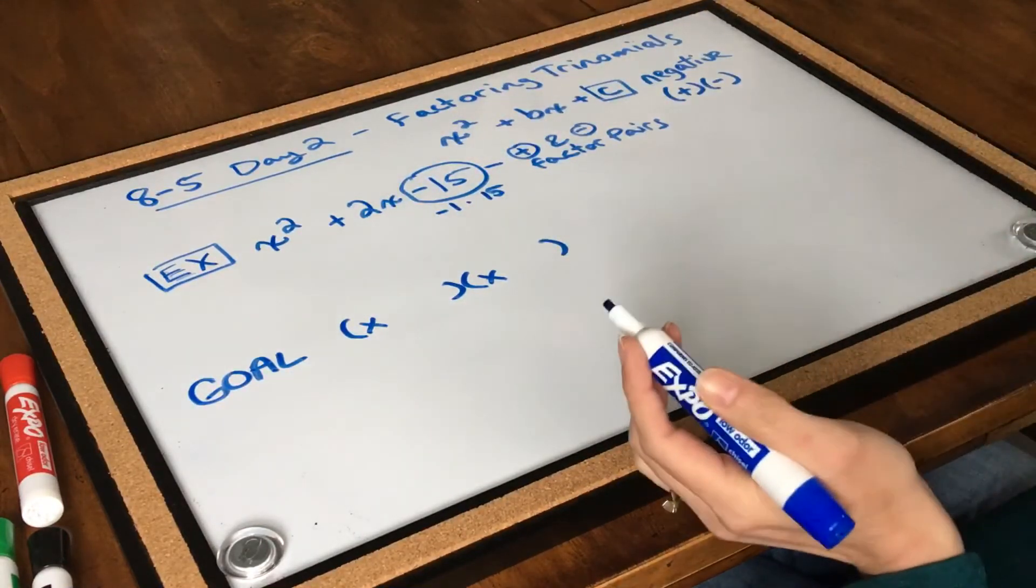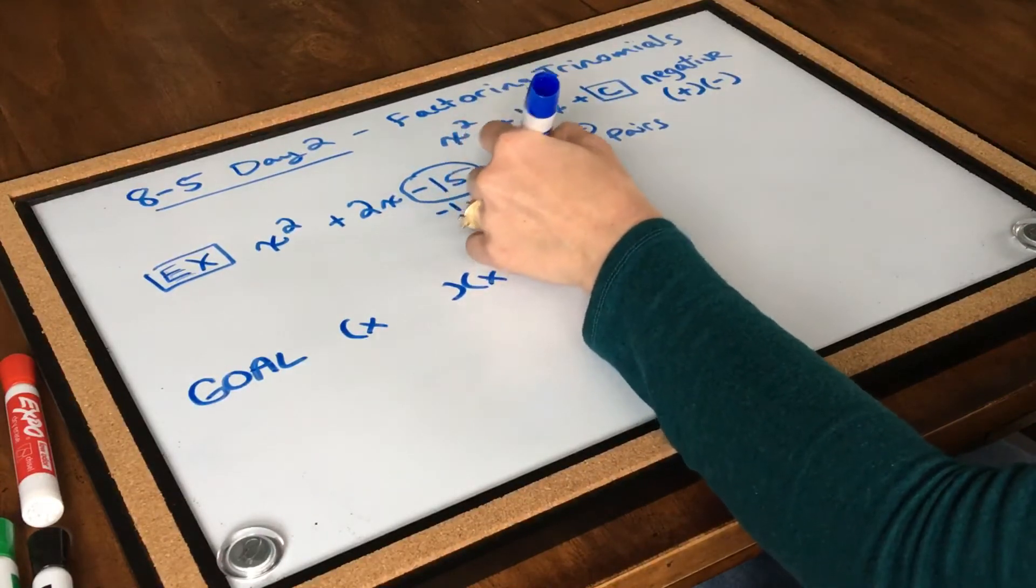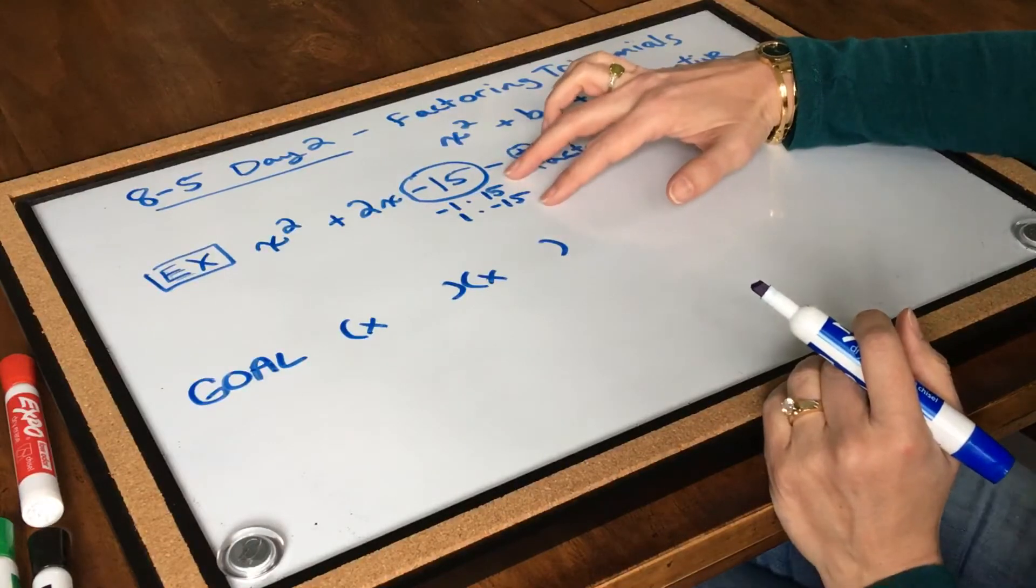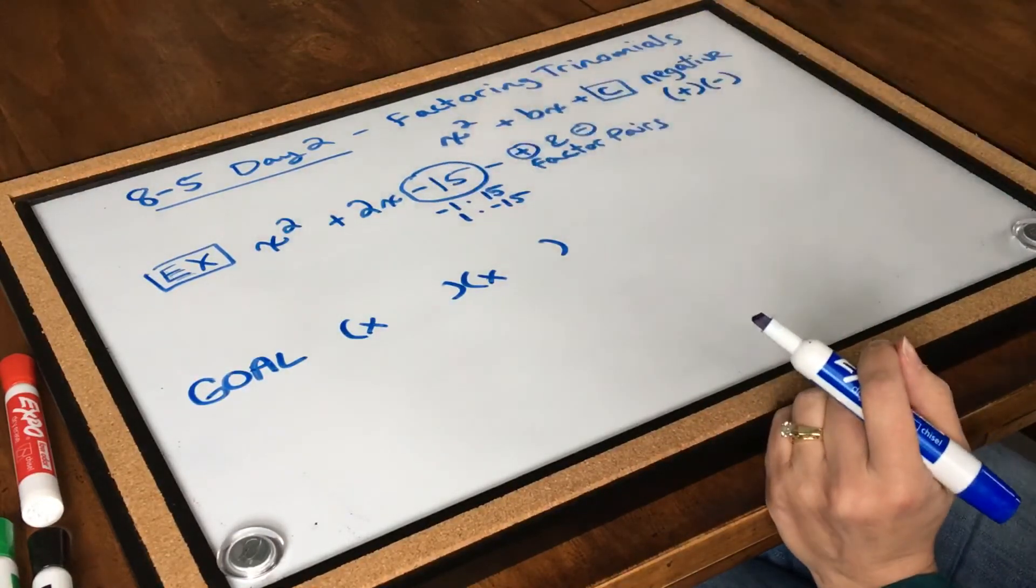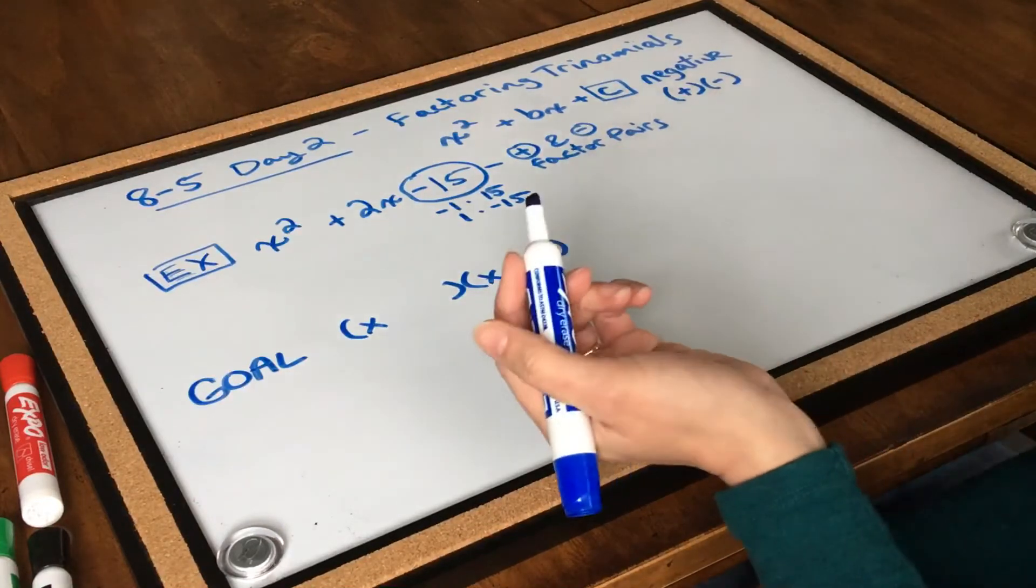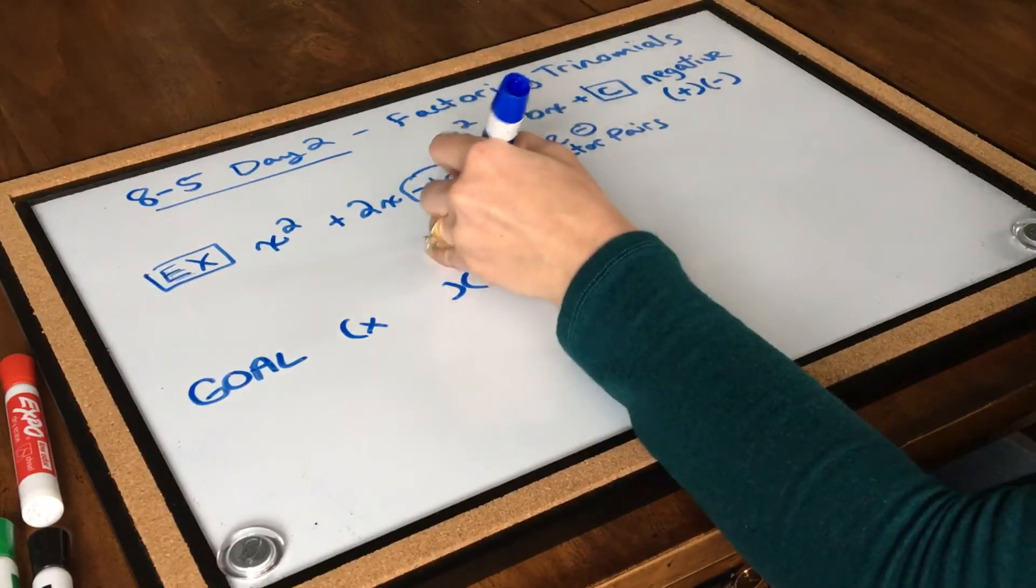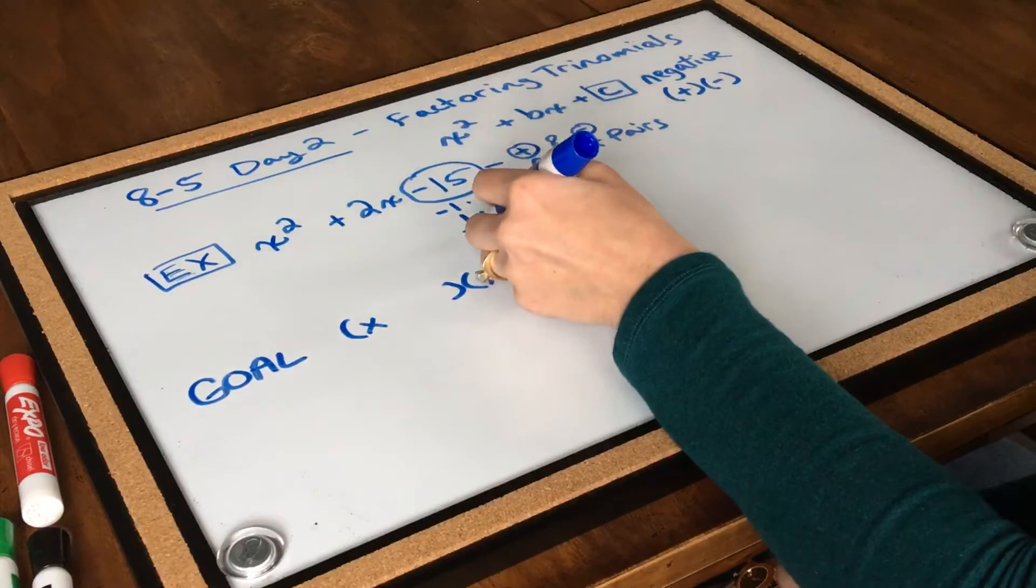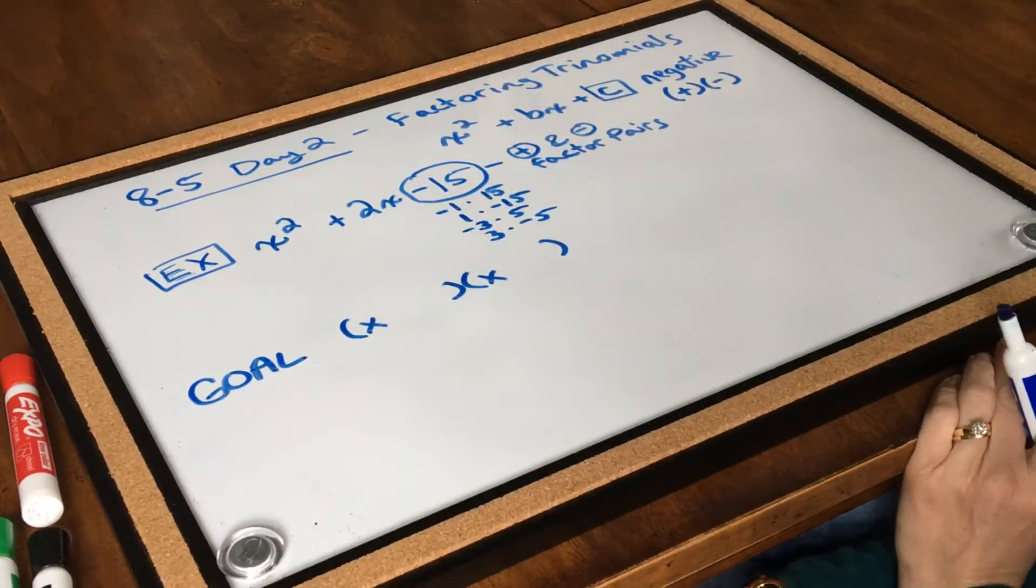For 15, it's possible to have a negative 1 times a positive 15. But of course, it's also possible to have a positive 1 times a negative 15. I've got positive and negative factor pairs, and I've just switched which one is positive and negative. Let's find the other factors of 15. My other factors of 15 are 3 and 5. So I'm going to look at negative 3 times positive 5, and I'm also going to look at positive 3 times negative 5.